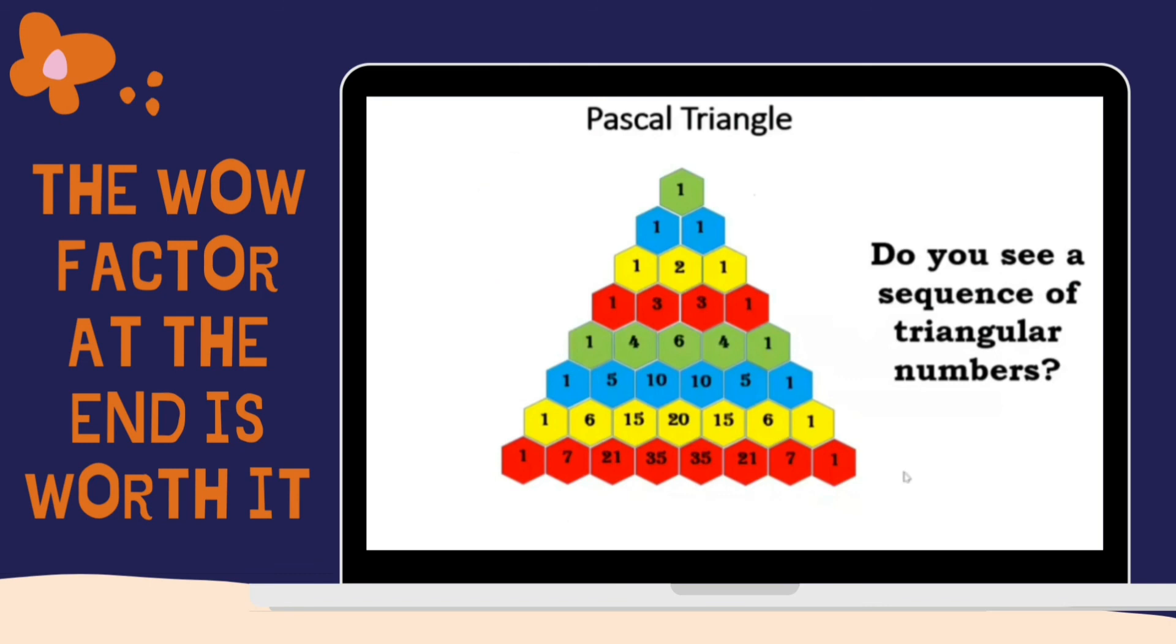You add the next row, right? When you add the next row, you will be adding nine hexagons. So, you'll get 36 plus 9, which is 45, which is the next triangular number. Well, that's interesting, right?